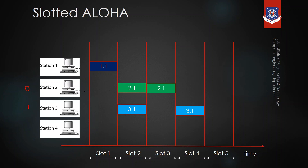In slotted Aloha, when more than two devices send a packet in the same slot and there is a collision, they wait for a random number of slots and then send the frame again. Stations 1 and 4 are also involved in a collision — they wait for a random number of slots and after waiting, they send the frame again.